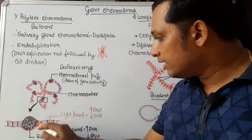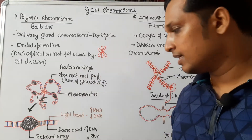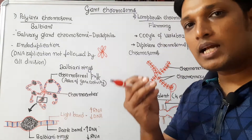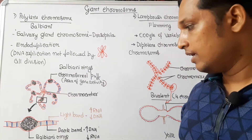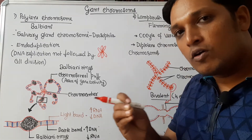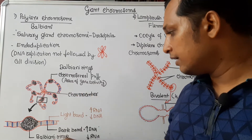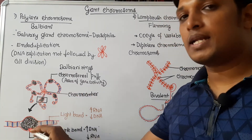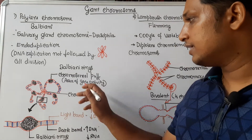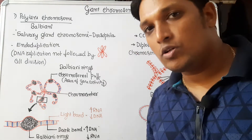These puffy regions are also named after the discoverer — Balbiani rings. What is the role of Balbiani rings? These puffy regions contain active genes, meaning they are DNA which can undergo transcription to form mRNA. Therefore, they are rich in mRNA content, which will translate into protein later on. Hence, it is a region of high gene activity. That is about polytene chromosomes.